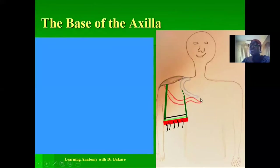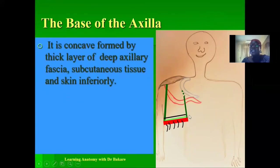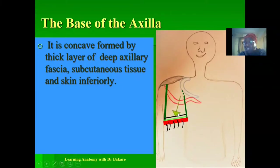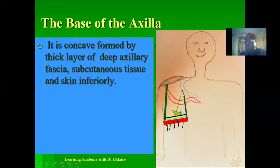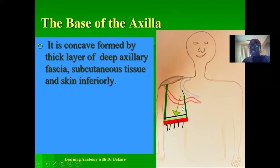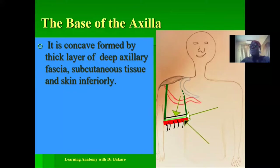The base of the axilla is concave — it is indented — and is formed by three structures. The deepest layer is the deep axillary fascia, which is an extension of the pectoral fascia that covers the pectoralis muscle in the chest region. This is followed by the subcutaneous tissue, and then on the external surface, we have the skin.